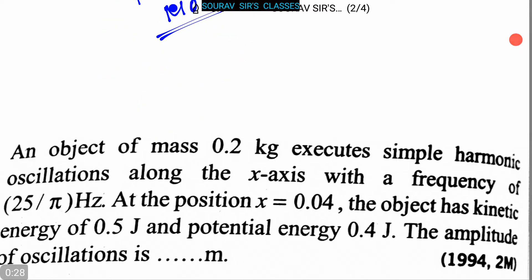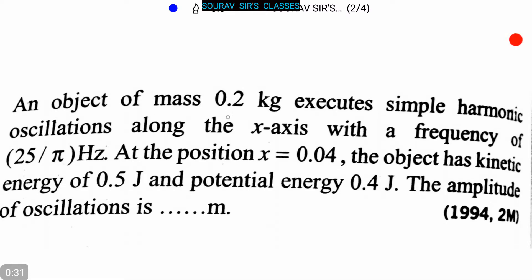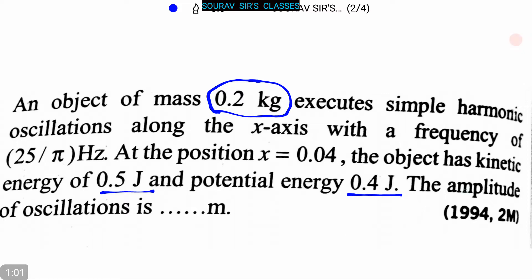Our first question: an object of mass 0.2 kg executes simple harmonic oscillations along the x-axis with a frequency of 25/π hertz. At the position x = 0.04, the object has kinetic energy of 0.5 J and potential energy of 0.4 J. We have to find the amplitude of the oscillation.